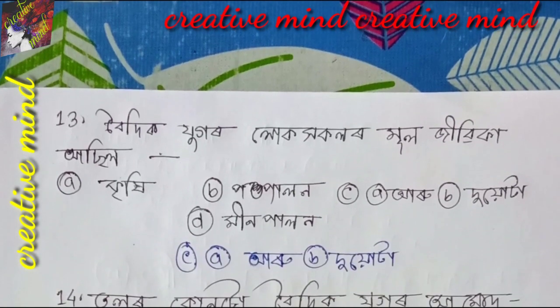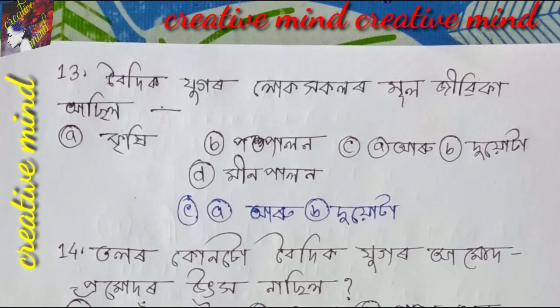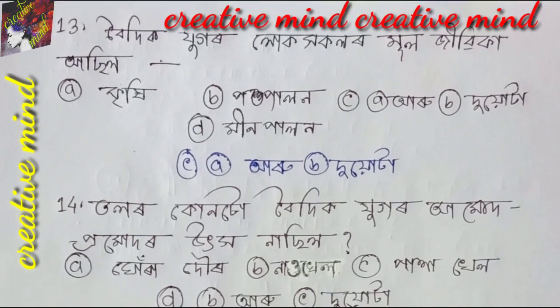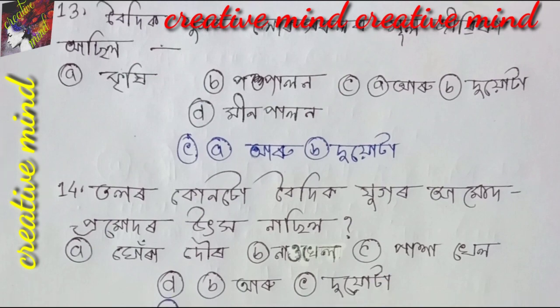Question number 14: Tala Kuntu Boidik Jugaar Amut Prahmudar Udka Nasil. Option A: Ghoradur. Option B: Nauchel. Option C: Pahakhel. Option D: B Aru C Do Ita — mane Nauchel Aru Pahakhel Do Ita. Yarekhu Dota to hoi. Option B: Nauchel.